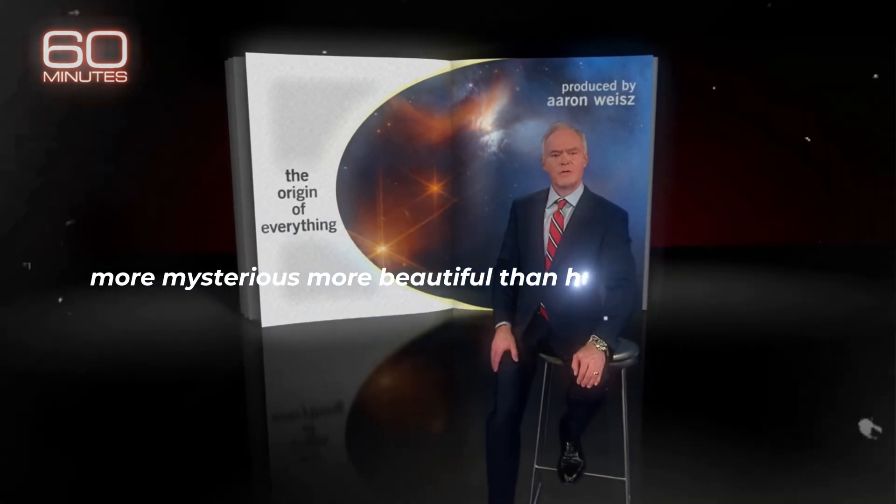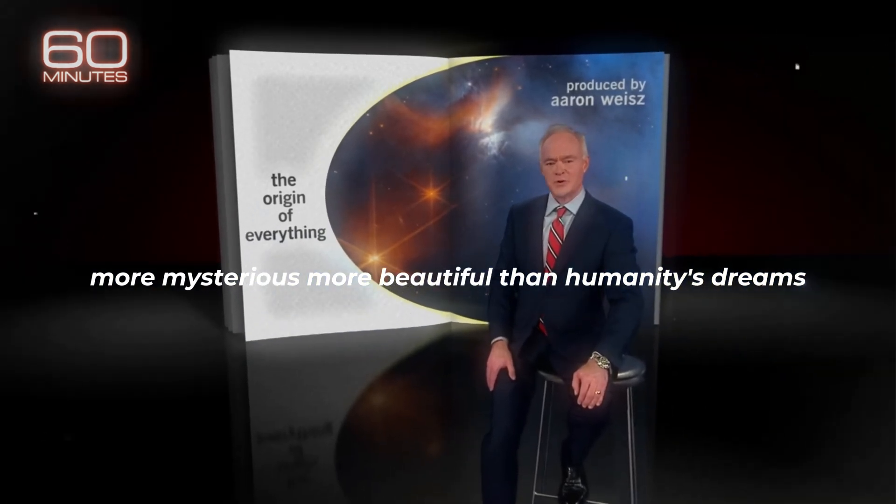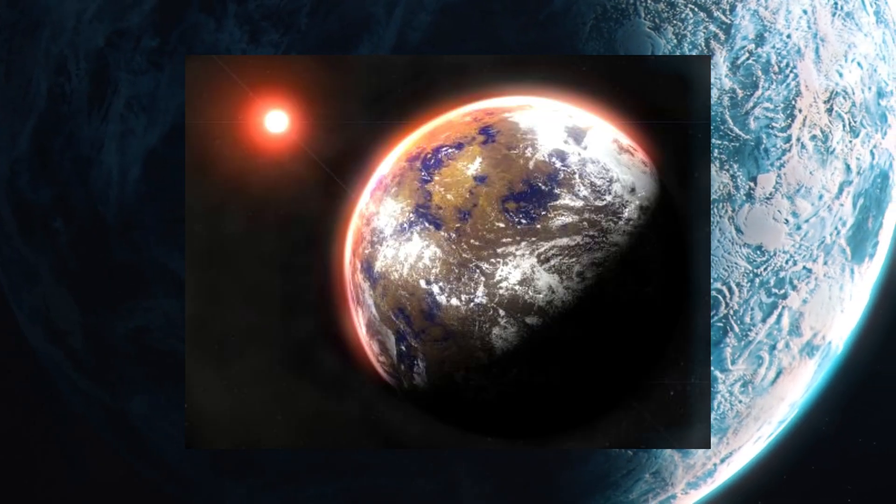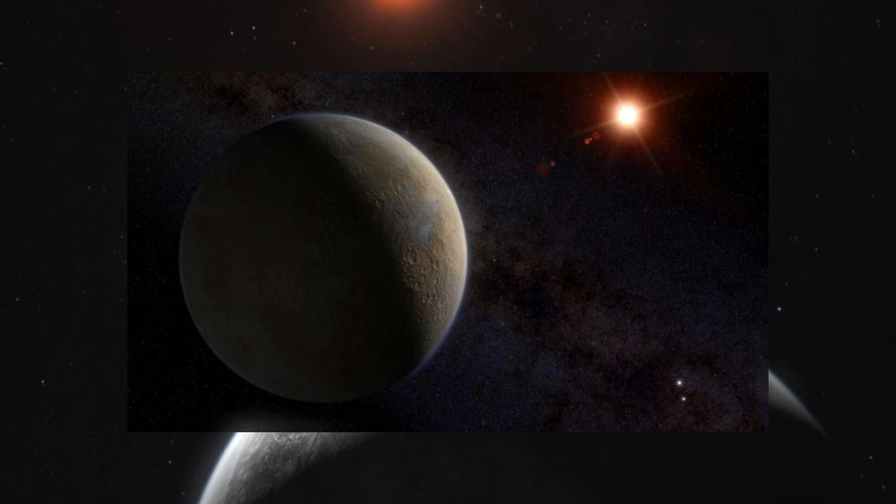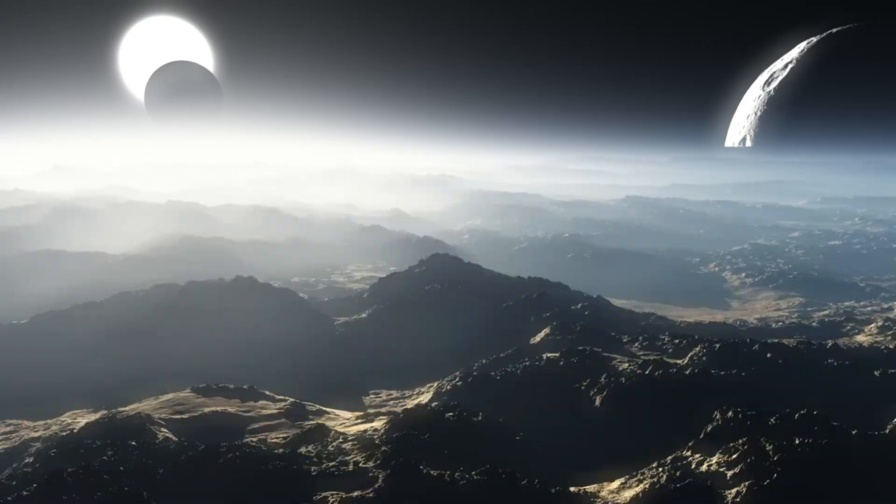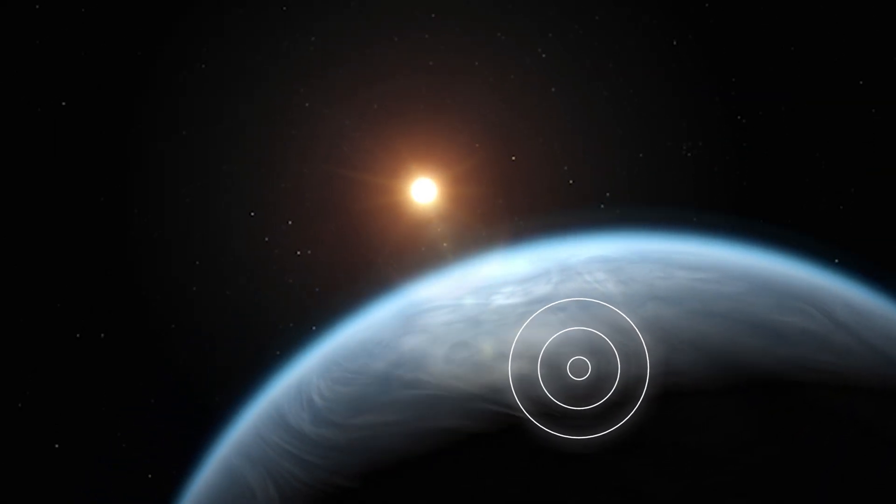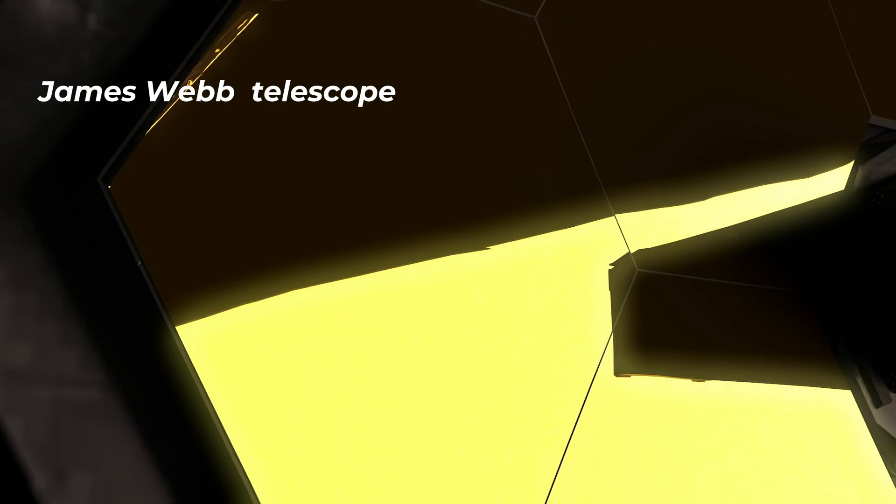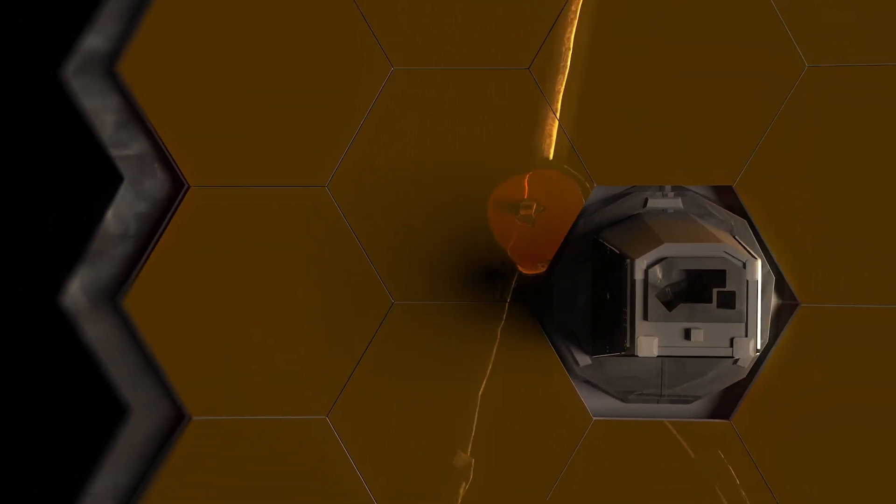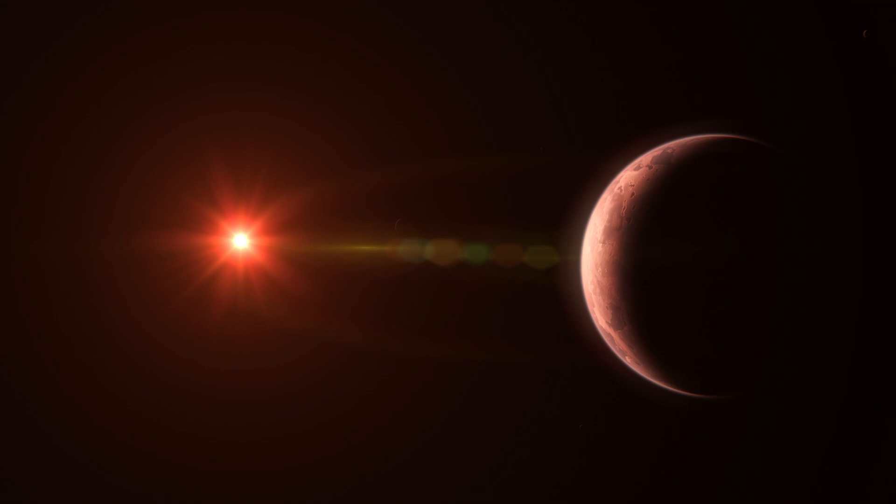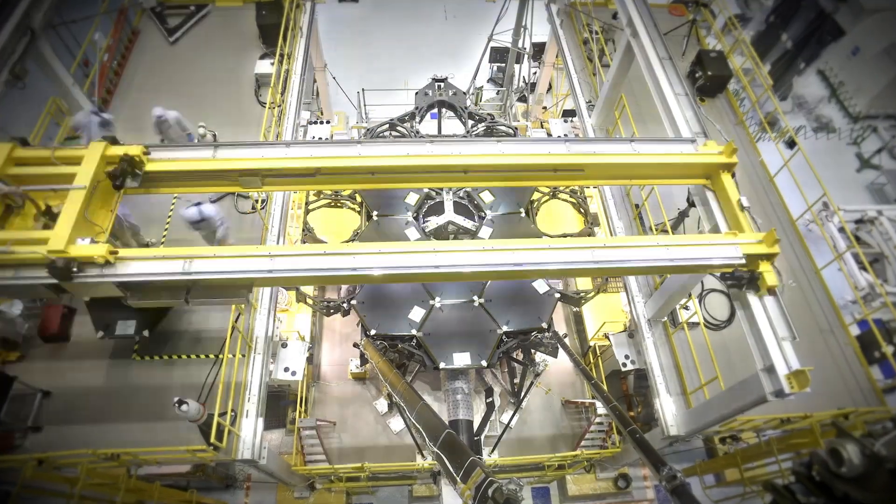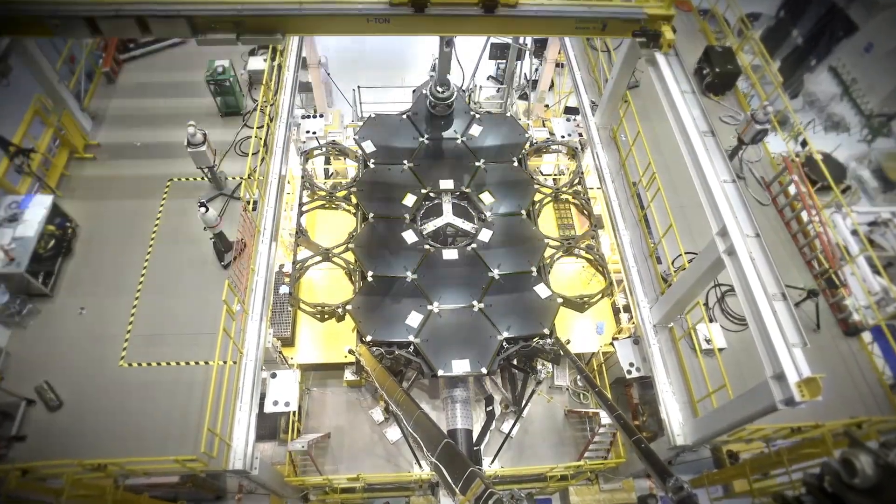NASA's James Webb Space Telescope has hardly opened its eyes, and the universe is new, more mysterious, more beautiful than humanity's dreams. Proxima Centauri might have the building blocks of life, and scientists think they found evidence of alien microbes thriving there. This exoplanet orbiting the star closest to our solar system is sending signals that are hard to ignore. Could this be the first proof of life beyond Earth?